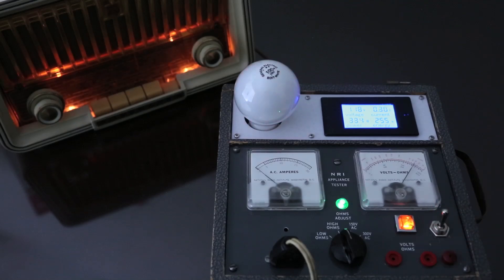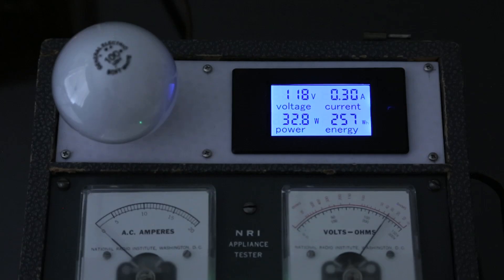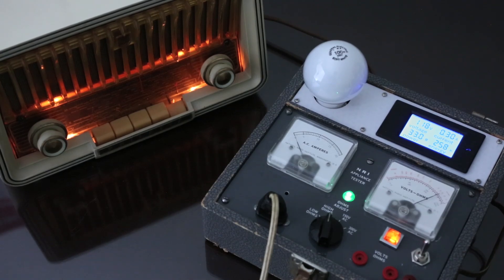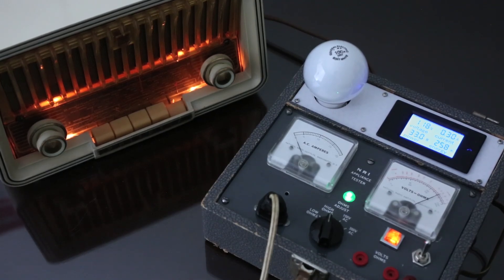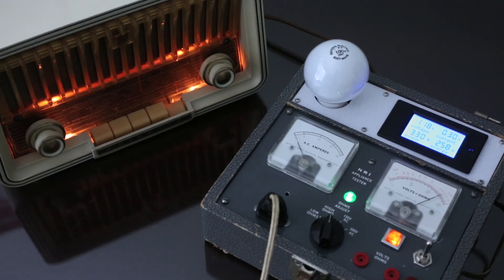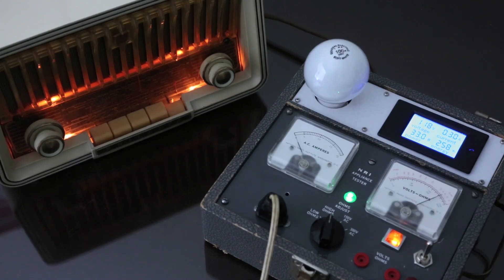When you turn the mode switch from test to operate position, the meter indicates 300 milliamps and 32.9 watts. From these results, the wattage of the incandescent light bulb should be between 60 to 100 watts for the test of 30 to 40 watt tube radios.